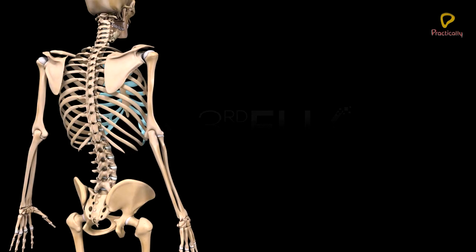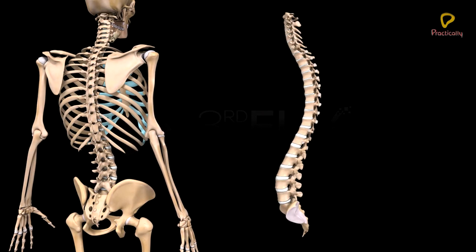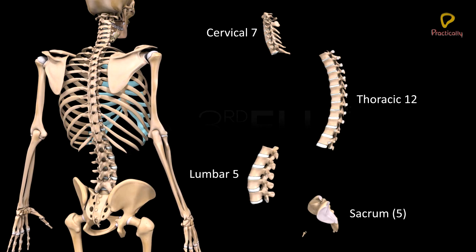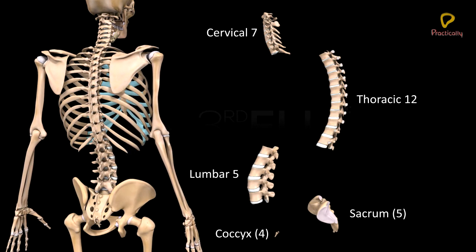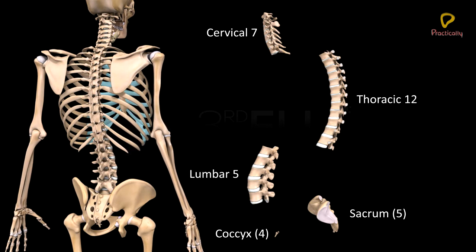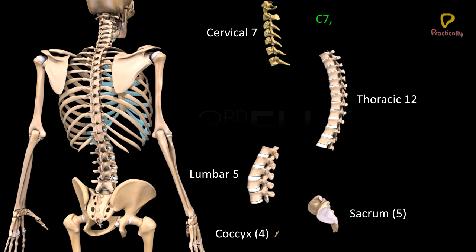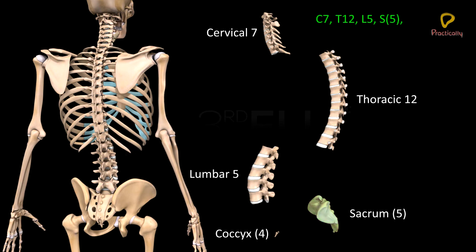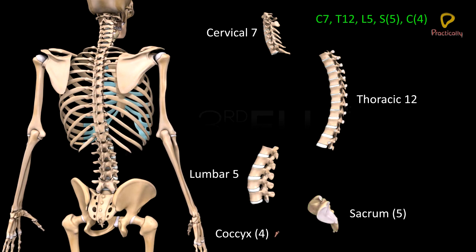Vertebrae are of five types: cervical, thoracic, lumbar, sacral, and coccygeal. The vertebral formula for human beings is C7, T12, L5, S5, C4.